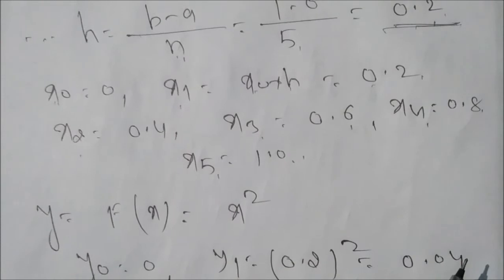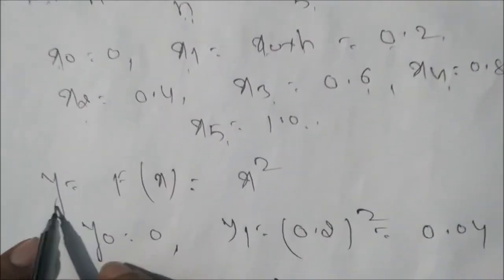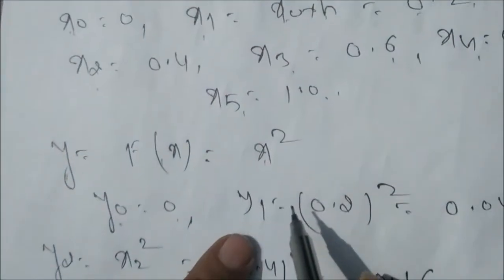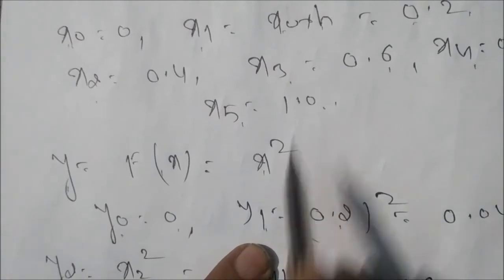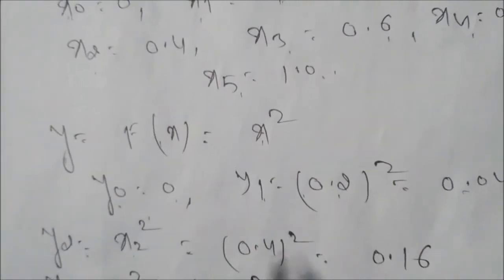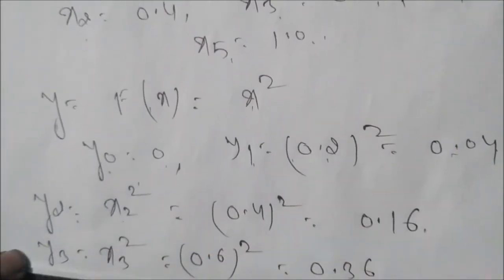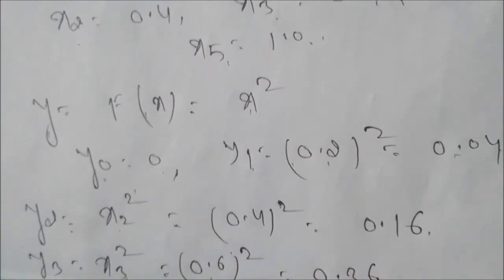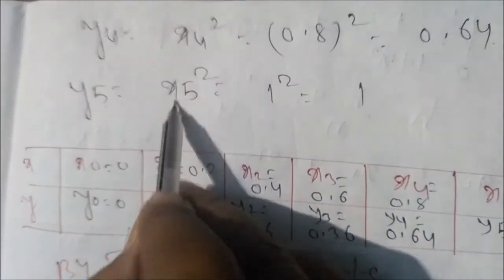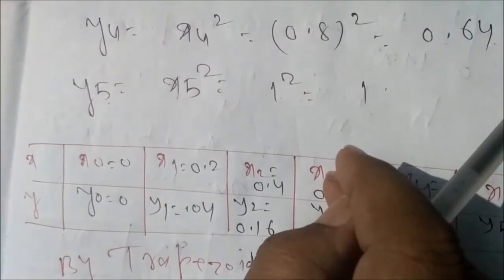Now we find y, value of y according to value of x. Here y equal to f(x) equal to x square from our problem. y0 when put x equal to 0 you get 0. Similarly y1 equal to x1 square, x1 is 0.2 that is 0.04. Similarly y2 equals x2 square, 0.4 whole square equal to 0.16. y3 equals x3 square, 0.6 square that is 0.36. y4 equals x4 square, 0.8 square is 0.64. And last y5 equals x5 square, 1 square equal to 1.